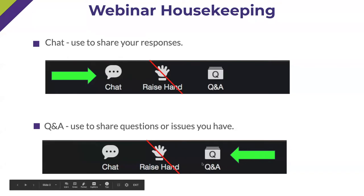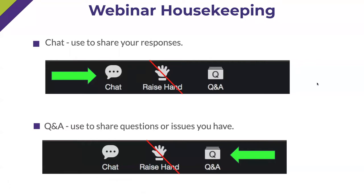The second part of Zoom we're going to use is the Q&A feature. That's where you'd put any TCI-related questions or issues that you think either Nathan, Kelsey, or Sarah can answer. We'll keep a close eye on the Q&A to answer all your questions by the end. If we run out of time, we'll follow up via email. There is a raise hand feature, but try to use Q&A for real questions and chat for interactions during the webinar.